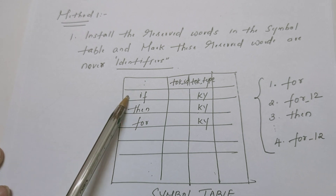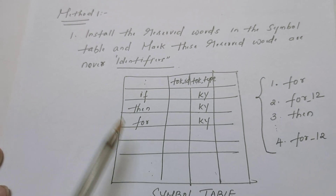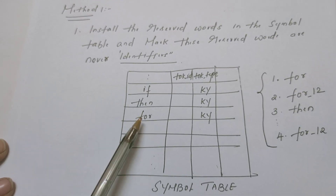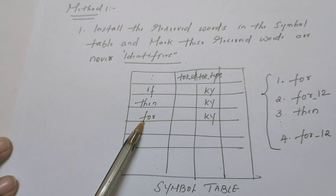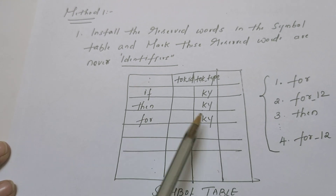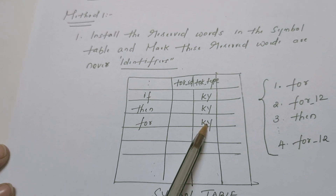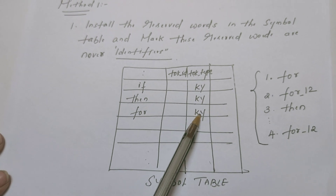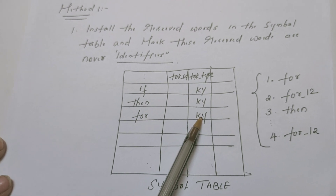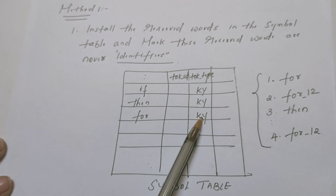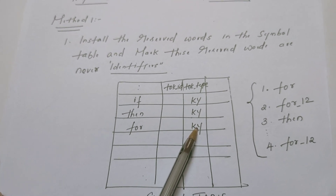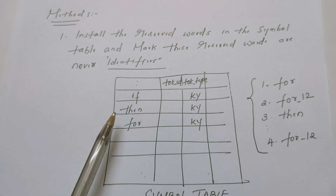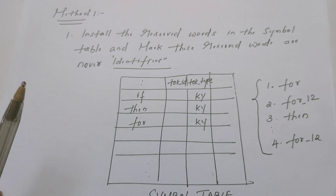For example, if, then, for, while — all the keywords are already inserted into the symbol table, and the information about those keywords is clearly marked: it is not an ordinary identifier, it is a keyword, it is a reserved word. This information is inserted.